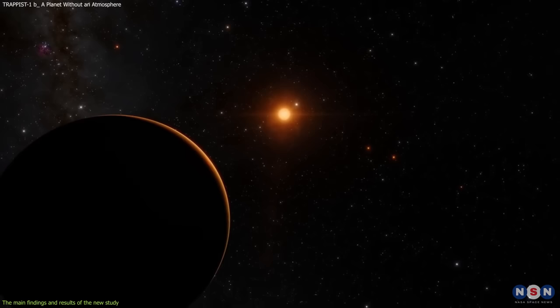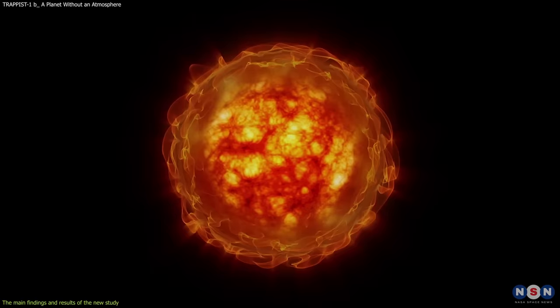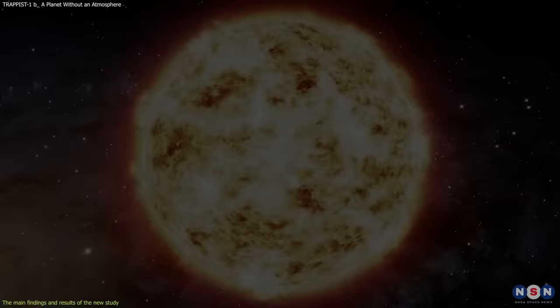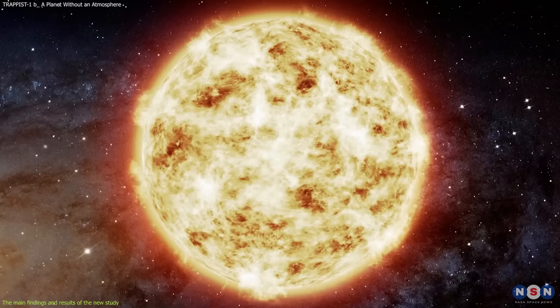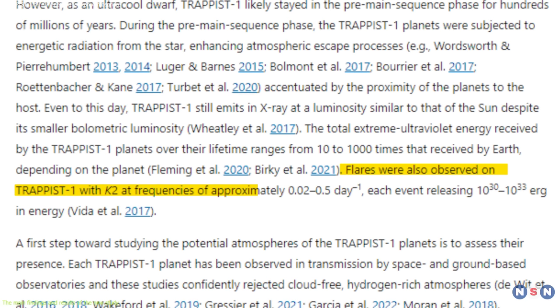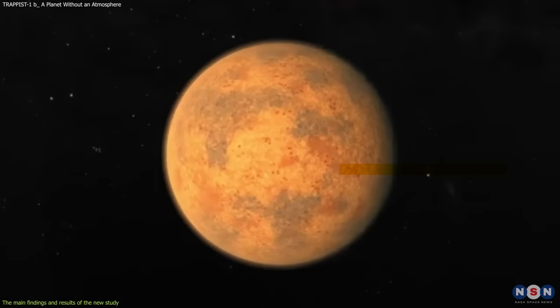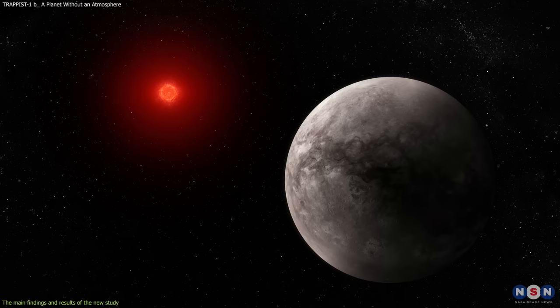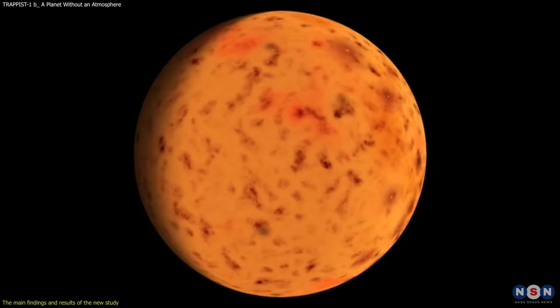However, the new study also found that the star's activity dominates the observations of TRAPPIST-1b. The star itself is a very low mass and cool star, also known as an M dwarf or a red dwarf. These stars are very common in the galaxy, but they are also very active and variable. They have flares, spots, and cycles that can affect their brightness and spectrum. The study detected several flares and spots on TRAPPIST-1 during the observations of TRAPPIST-1b, which created noise and variability in the data. So they had to correct for these effects to isolate the signal from the planet.